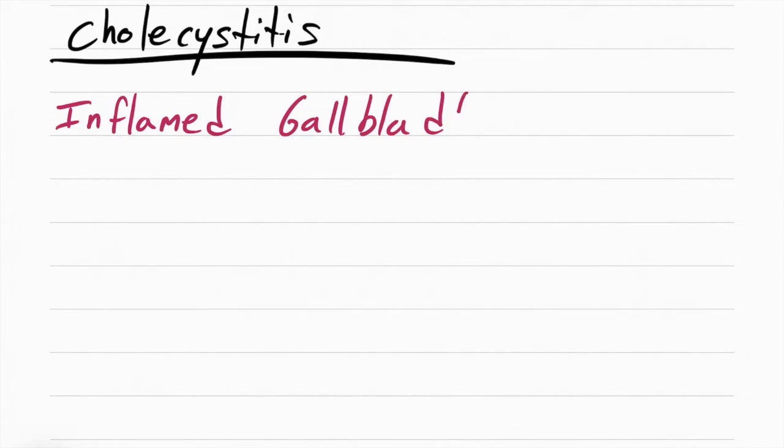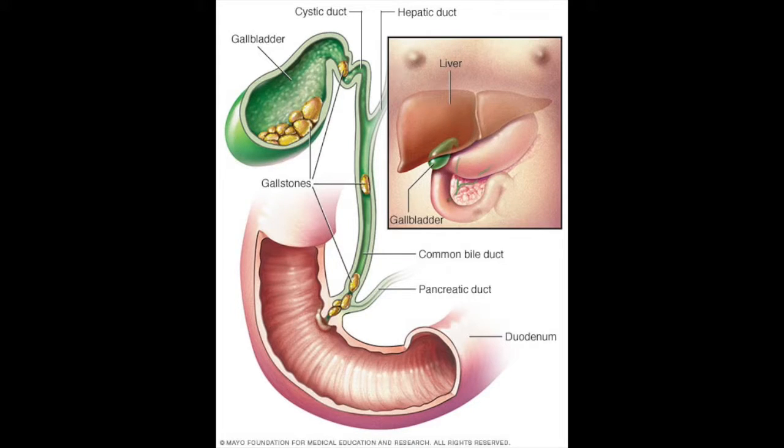Cholecystitis literally means inflammation of the gallbladder. The reason the gallbladder is inflamed is because of gallstones. Gallstones has a fancy name, it's called cholelithiasis. Now, these stones are actually made up of fat. They're made up of cholesterol.